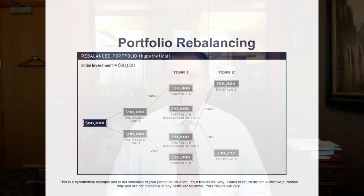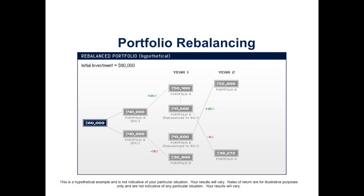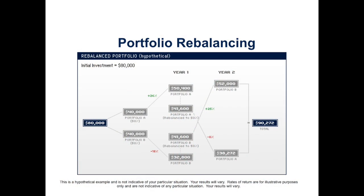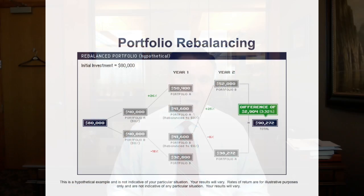Now we continue, and that same thing happens. The second year, the first asset category goes down by 8%, and your second category goes up by 25%. This time, your account value at the end of the second year is worth over $90,000. The only thing you changed was that you rebalanced. This gave your account an increase of about $3,000.